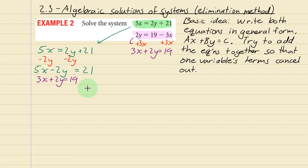You can see that if you add the left sides together and then add the right sides together, what you're going to get is 5x plus 3x which is 8x, negative 2y plus 2y is 0, and 21 plus 19 is 40. That was the whole point—that was the elimination step where the 2y is cancelled out. Negative 2y and positive 2y cancelled out and we end up with this nice equation with just one variable.